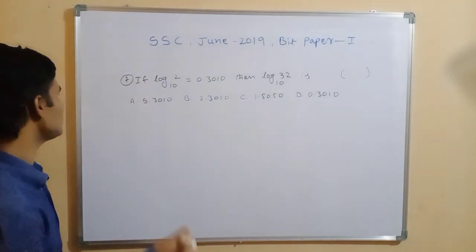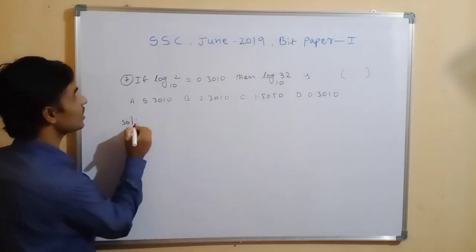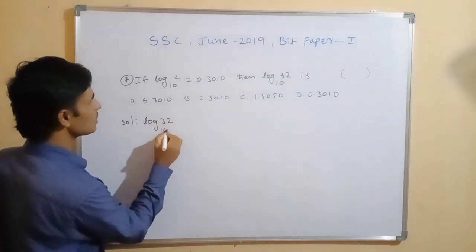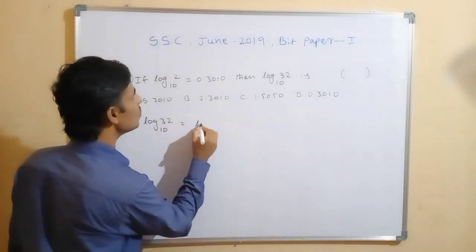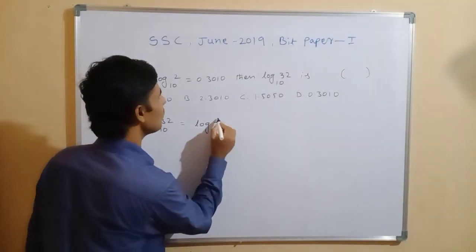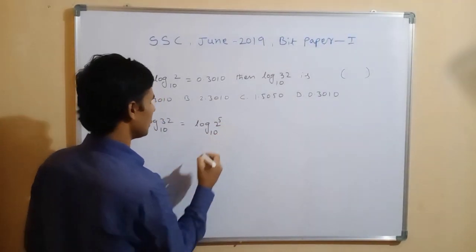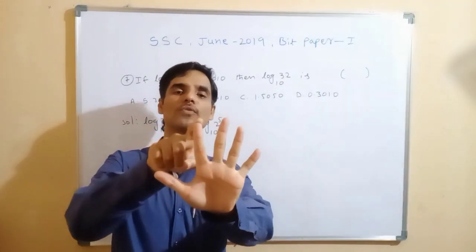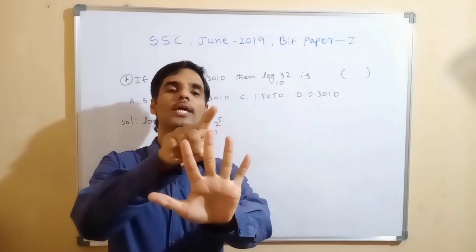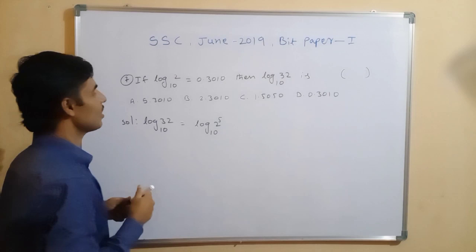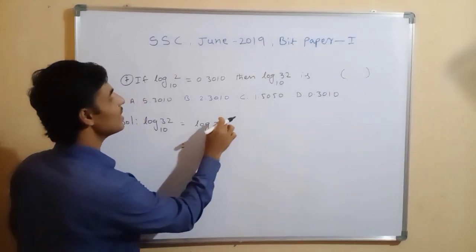For this, first you take log 32 base 10 equals... 32 we can write as 2 to the power of 5, base 10. Why? Because 2 multiplied 5 times: 2 to 4, 4 to 8, 8 to 16, 16 to 32. So 2 to the power of 5 we wrote, so the power here will come here.